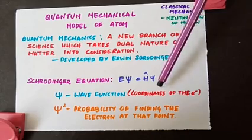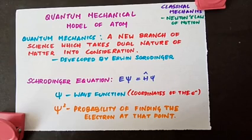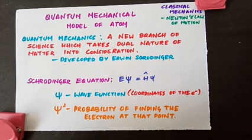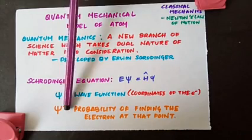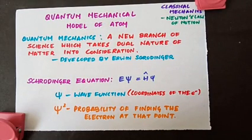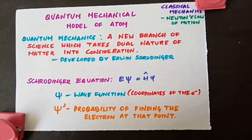The wave function ψ is a mathematical function whose value depends upon the coordinates of the electron in the atom, and it does not carry physical meaning by itself. Just like with sound and light waves — the amplitude can be drawn, but only the square of the amplitude gives the intensity. Similarly, ψ has no direct physical significance, but ψ² gives the probability of finding the electron at that point.